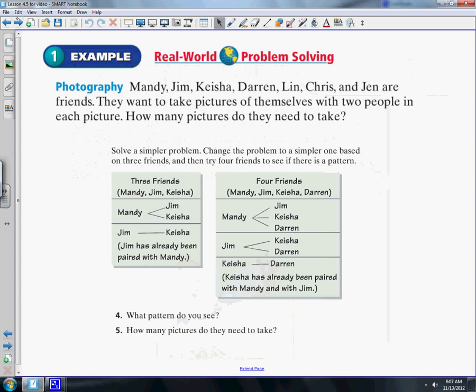Here's the problem: Mandy, Jim, Keisha, Darren, Lynn, Chris, and Jen are friends. They want to take pictures of themselves with two people in each picture. How many pictures do they need to take?